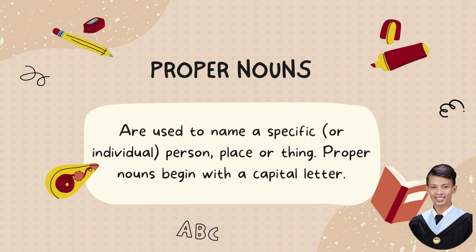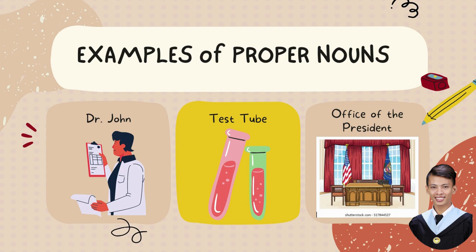Proper nouns are used to name a specific or individual person, place, or thing. Proper nouns begin with a capital letter. Examples are Dr. Jan, test tube, and office of the president. Dr. Jan is a specific name of a doctor, test tube is a specific name of a laboratory apparatus, and the office of the president is a specific name of an office.